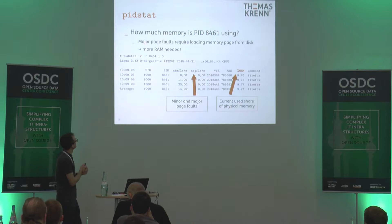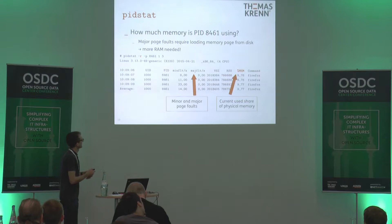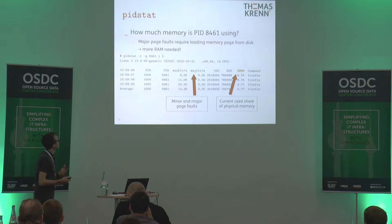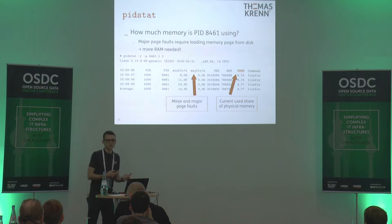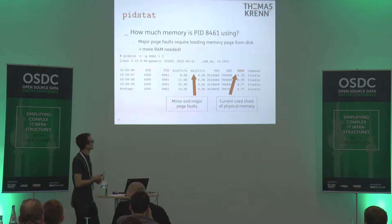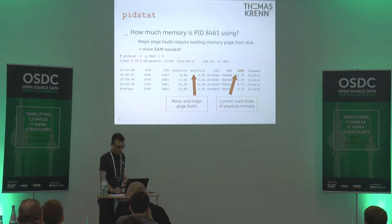There are also other reports for PIDSTAT. For example, there's a device report with the minus-D command, which reveals which command is causing the IO we're seeing with the MPStat command. Another possibility is checking how much memory a PID is using. In the column for major faults, high numbers indicate we need to load memory pages from disk — meaning data has been swapped out — which is a good indicator that it's time to add more memory.